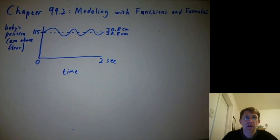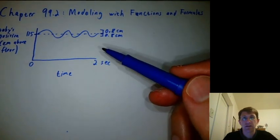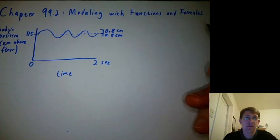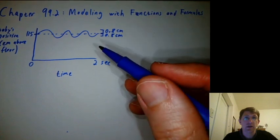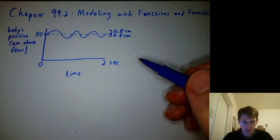So at this point we've modeled it with a function because drawing a graph like this is describing a function. We haven't used a formula yet, but this is a perfectly good function we can draw. So what went into making a graph like this?